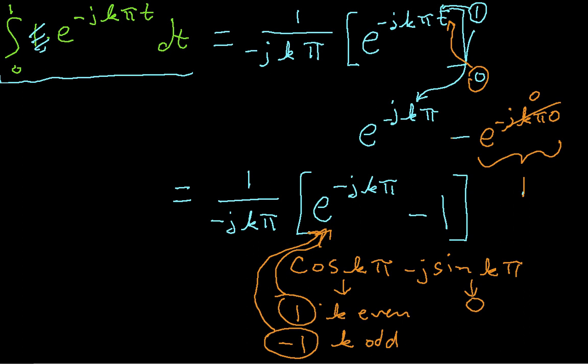So the end result of this is that this is equal to minus 2 over minus jkπ when k is odd, and 0 when k is even. Okay, and I can simplify this a little bit by just crossing out the negative signs here. Okay, so it turns out that we get the same result here as we had in the other term in the integral.